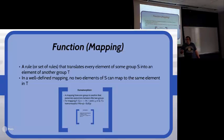Our first definition is for a function, which is a rule or set of rules that takes elements from one set or group S and translates them to elements in another set or group T. In a well-defined mapping, no two elements from the same group can map to the same element. You can't take one element, plug it into a function, and get two different elements.